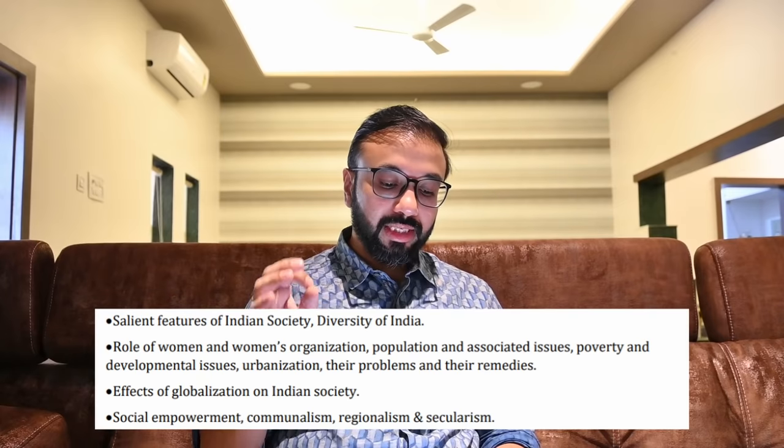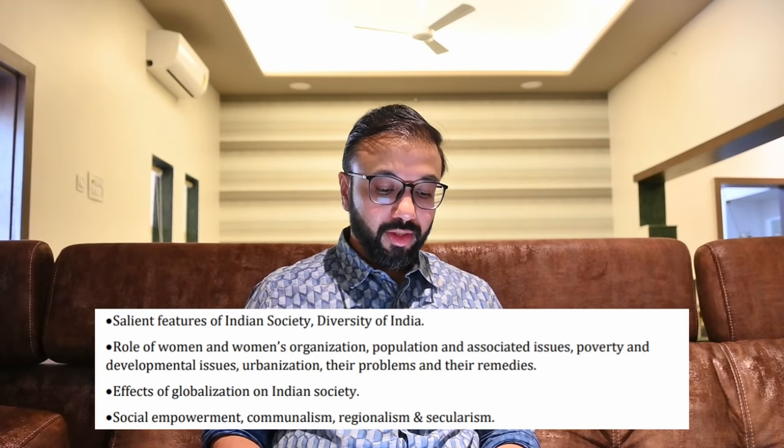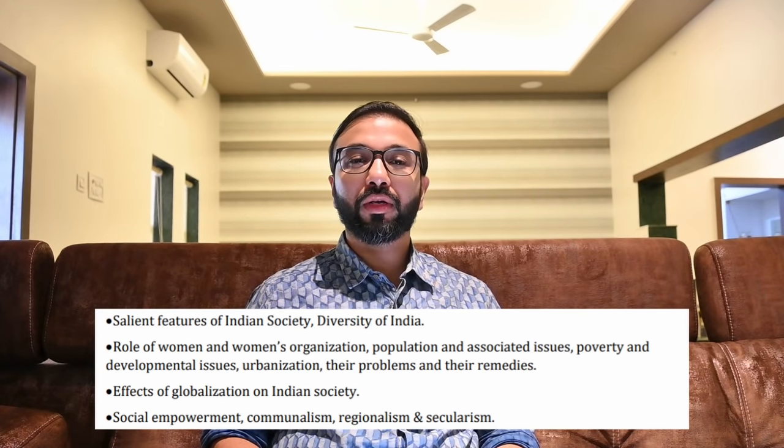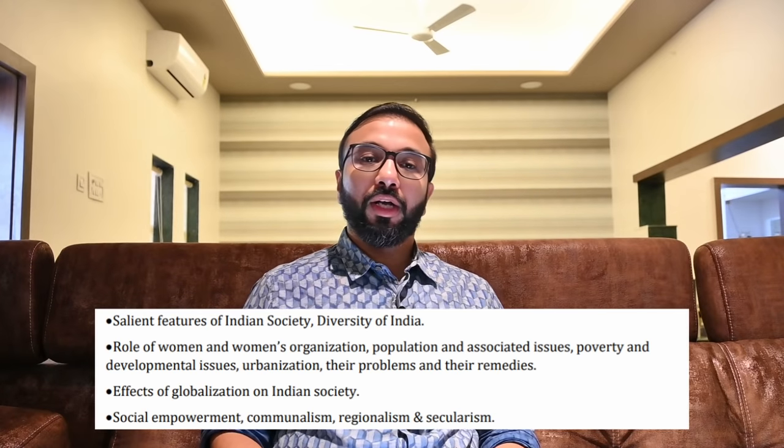The first topic in Society is salient features of Indian society and diversity of India. You can cover this from the Ram Ahuja book and the NCERT book — both are very good. Look at basic features of Indian society: how family is structured, what role religion plays, what role caste plays, what role various languages play, and how outside factors like globalization and capitalism have impacted Indian society. The best way to read these things is to pick up the past 5-6 years of UPSC question papers, read them, deconstruct them, reverse-engineer them — identify what topics are being tested — and your studies become much easier.